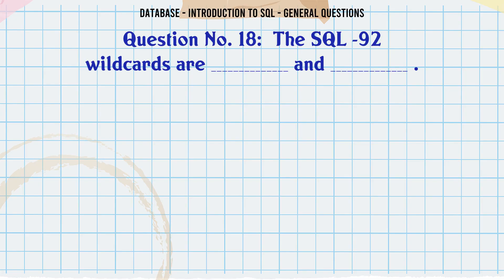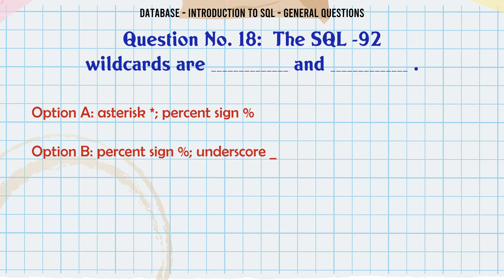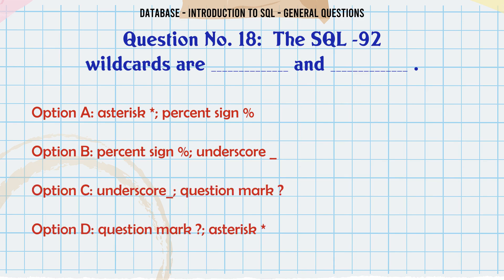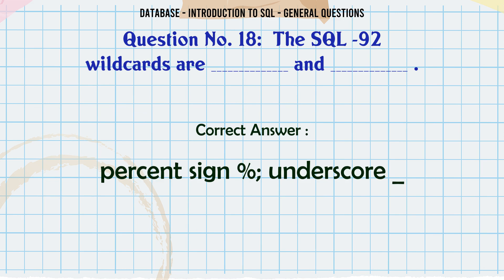SQL 92 wildcards are: A. Asterisk, percent sign. B. Percent sign, underscore. C. Underscore, question mark. D. Question mark, asterisk. The correct answer is: percent sign, underscore.